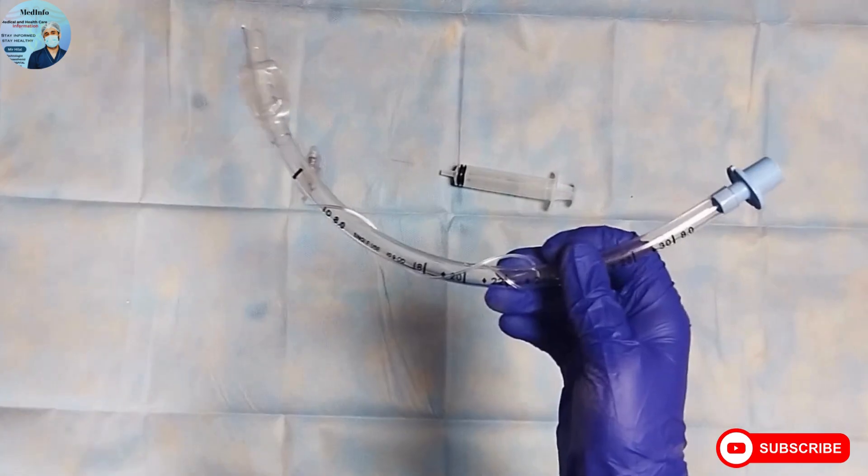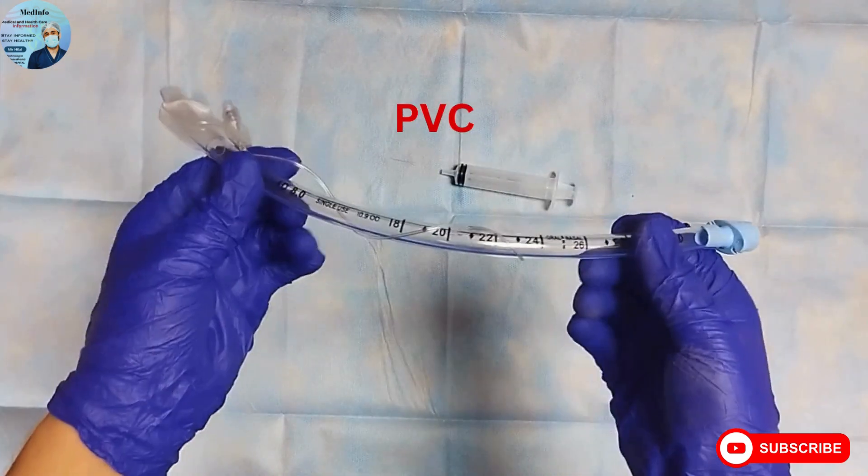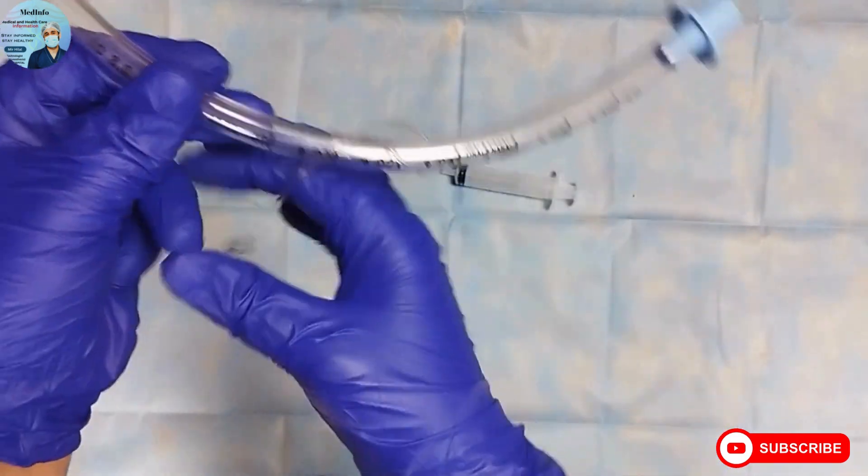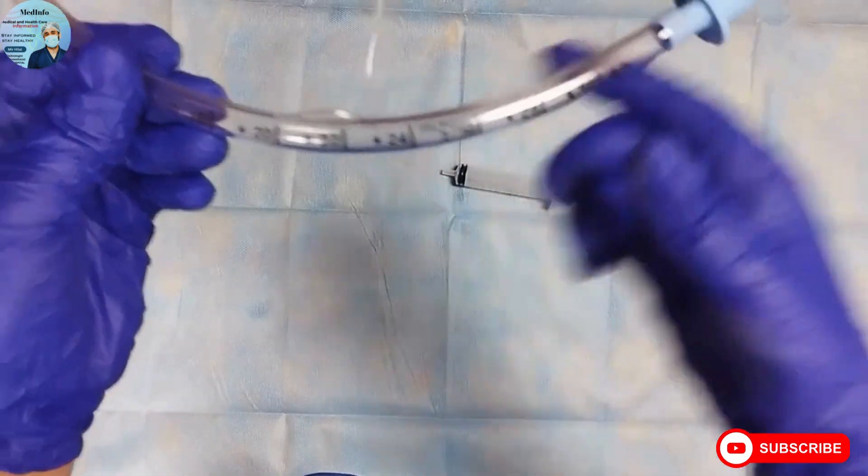Endotracheal tubes are mainly made of polyvinyl chloride and may be cuffed or uncuffed. These modern day endotracheal tubes are disposable and transparent.